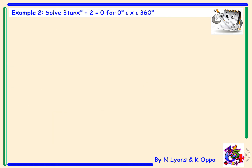Example 2: solve 3tan(x) plus 2 equals zero for x between 0 and 360 degrees. The first step is to rearrange to make tan(x) the subject. We subtract 2 to get 3tan(x) equals negative 2, then divide by 3, giving tan(x) equals negative two thirds.